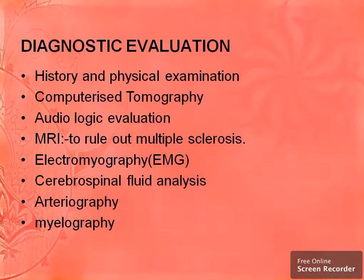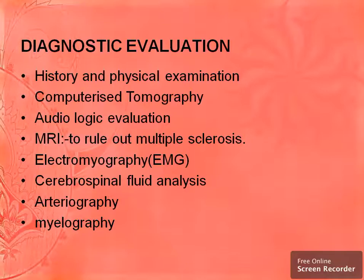For diagnostic evaluation of trigeminal neuralgia, we start with history and physical examination, then CT scan. Audiologic evaluation is a series of diagnostic procedures used to determine the type or degree of hearing loss, with the goal of developing a unique treatment plan to improve communication. MRI is done to rule out multiple sclerosis, and electromyography records the electrical activity of muscle tissue.